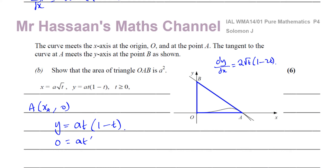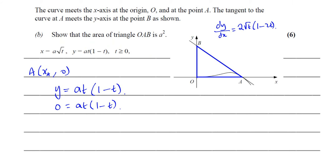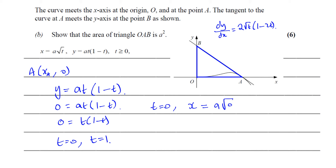This gives two solutions: t equals 0 and t equals 1. When t equals 0, x equals a times root 0 equals 0, which is the origin. So t equals 0 corresponds to the origin O, and t equals 1 is the point A. At t equals 1, x equals a times root 1 equals a, so the coordinates of A are (a, 0).